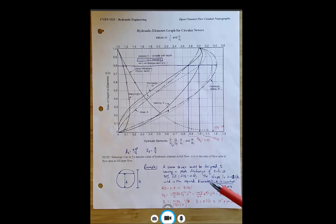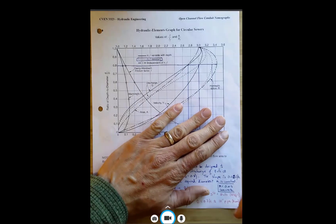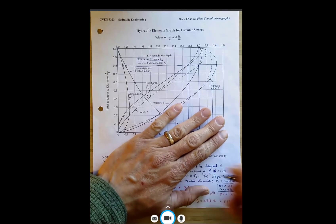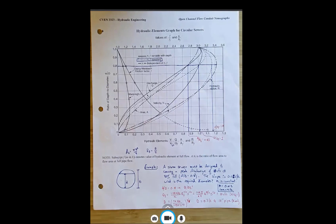So here's just a kind of a FE type question you might get. A storm sewer must be designed to convey a peak discharge of 10 CFS. And I'll post this too if I get too fast for y'all. So peak discharge of 10 CFS.